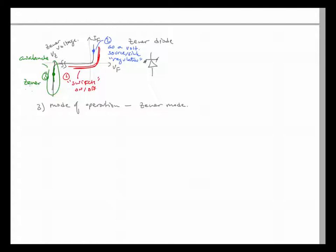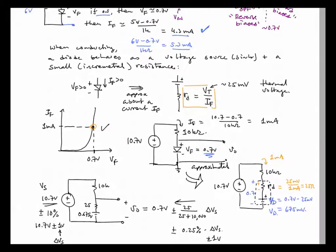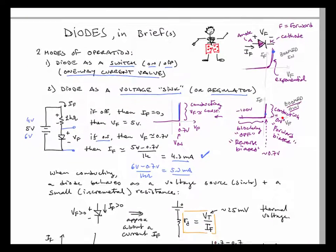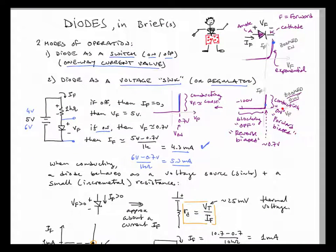In summary: mode one is operating the diode from reverse-biased through to forward-biased — acting as a switch, on and off. Mode two is operating at some forward-biased operating point in a small range — as a voltage source, sink, or regulator. Mode three, for Zener diodes, is operating in the avalanche/Zener breakdown region. We're going to focus on using diodes as a switch and as a voltage regulator. Let's look at some circuits.